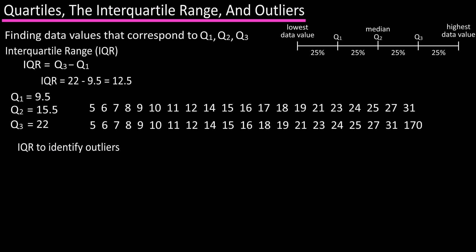Using the same data set from earlier, I wrote in 170 instead of 17. So we're going to use the IQR to identify any possible outliers in this altered data set.